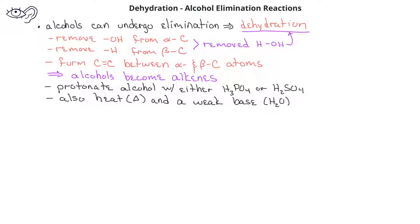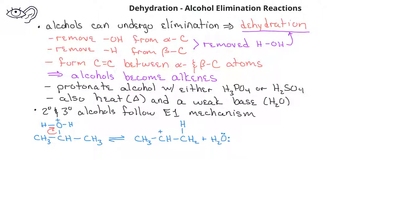Secondary and tertiary alcohols will follow the E1 mechanism. Once we have the protonated alcohol, the sigma electrons between the alpha carbon and the oxygen can be donated to the oxygen, so we get a water leaving group. This also forms a carbocation.